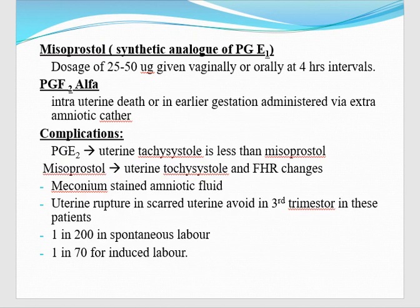Another tablet is prostaglandin E1 analog — misoprostol. The dose is 25 to 50 micrograms. It can be given vaginally or orally at 4 hourly intervals. Then prostaglandin F2 alpha — in case of intrauterine death or if the patient is in the first or second trimester, we can use prostaglandin F2 alpha by extra-amniotic catheter.